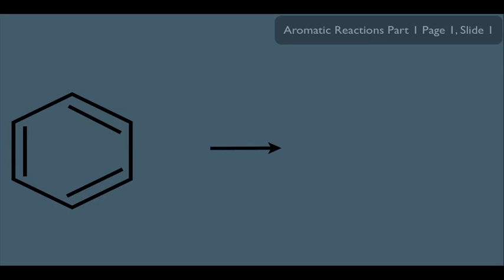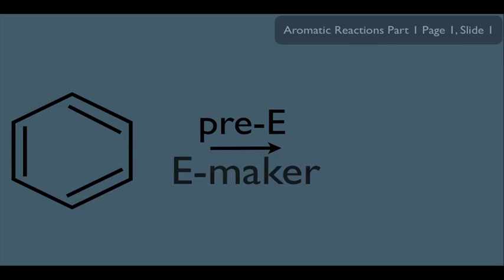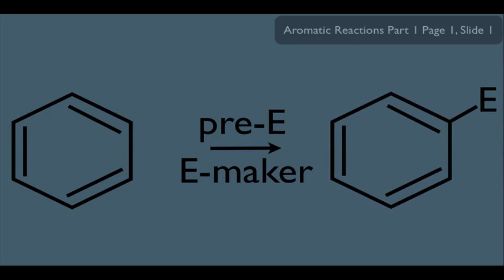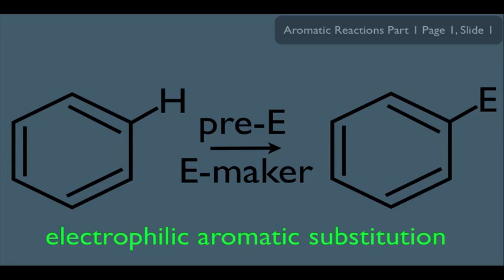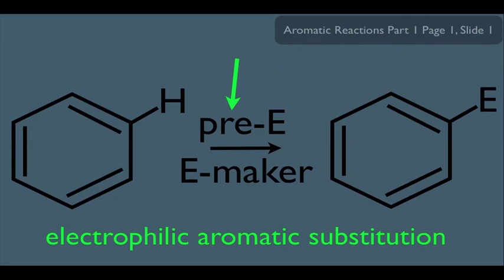Here's what makes up an aromatic reaction. You have this aromatic molecule, and you react it with a pre-electrophile and an electrophile maker, and you end up with the substituted product in electrophilic aromatic substitution. Notice we're adding an E to the molecule, which originally had an H — that's the general layout for EAS. The pre-electrophile is what replaces the hydrogen and gets placed onto the ring.